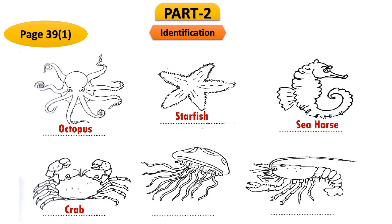In the middle, an animal we sometimes see at the seashore in our country is the jellyfish. On the right, the most popular sea animal that we love to eat is the lobster — sometimes also known as shrimp. Both answers are correct; you can write either lobster or shrimp.